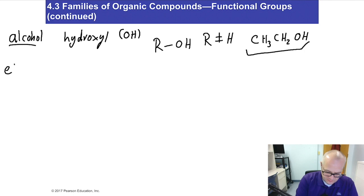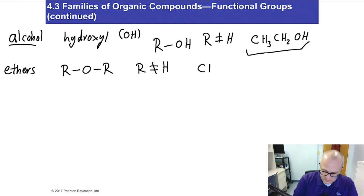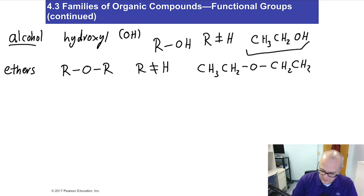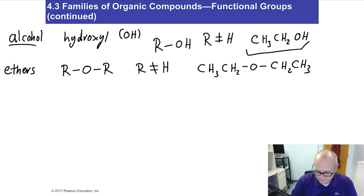How about ether? Ethers contain R-O-R, where R cannot be hydrogen. For example, CH3-CH2-O-CH2-CH3 is diethyl ether. Notice the similarities between ethers and alcohols: they both contain an oxygen. Alcohol has an O-H bond, while an ether has some kind of alkyl group on either side — neither of them is hydrogen. So this is not an alcohol; alcohol has to have an OH.